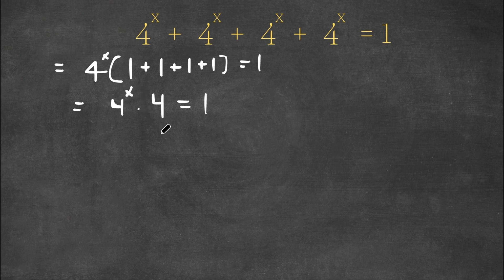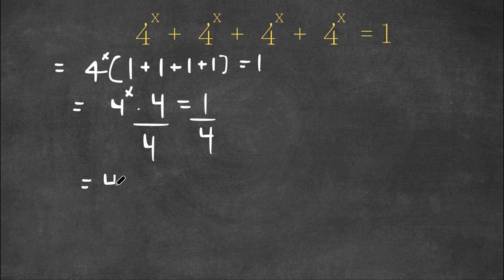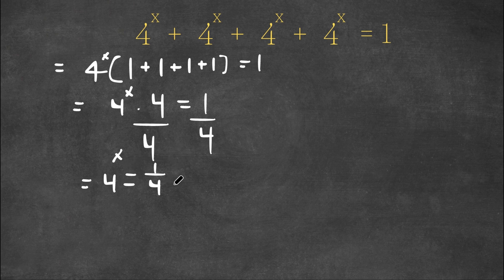Now I want to isolate x, so I'm going to divide by 4 on both sides to move the 4 to our right-hand side. This gives us 4 to the power of x is equal to 1 divided by 4, which is simply 1 over 4.